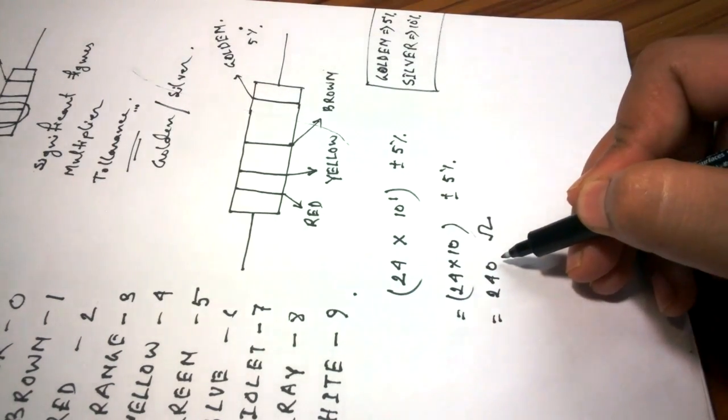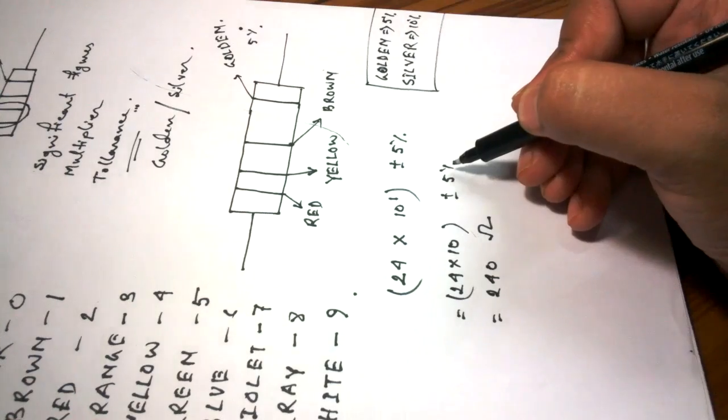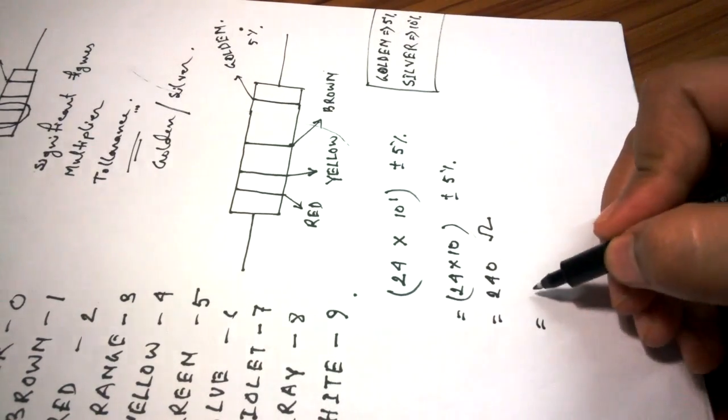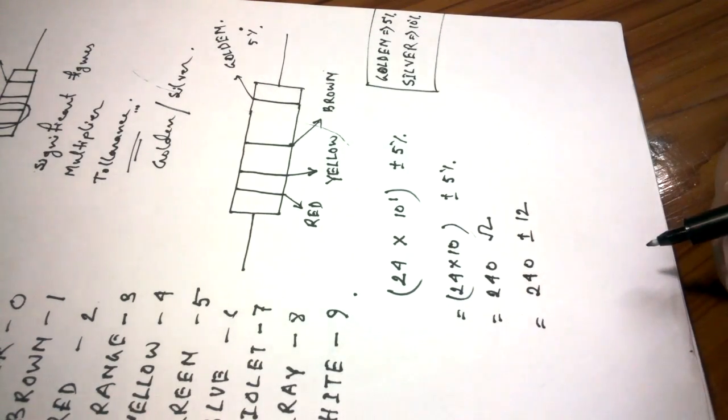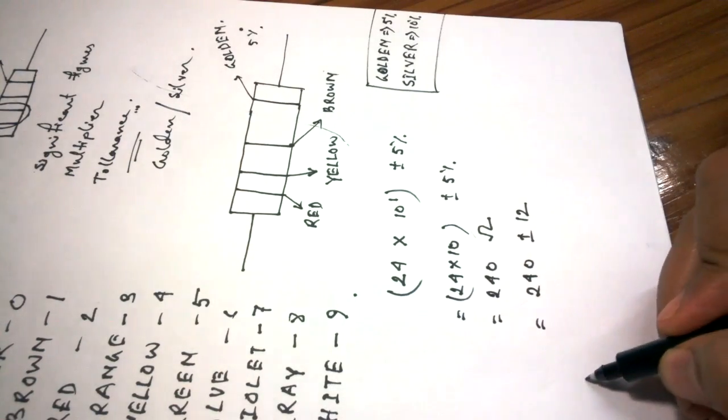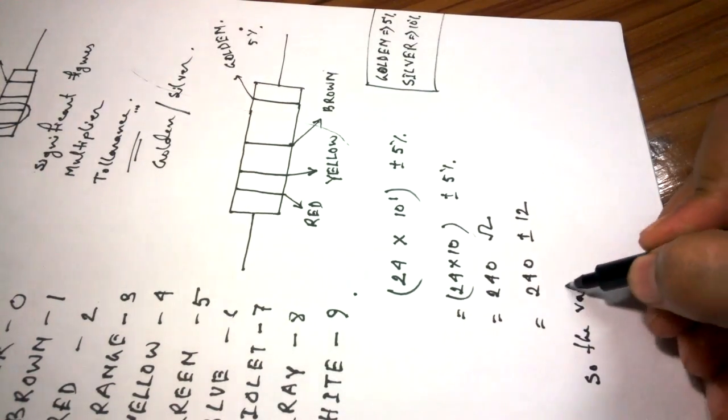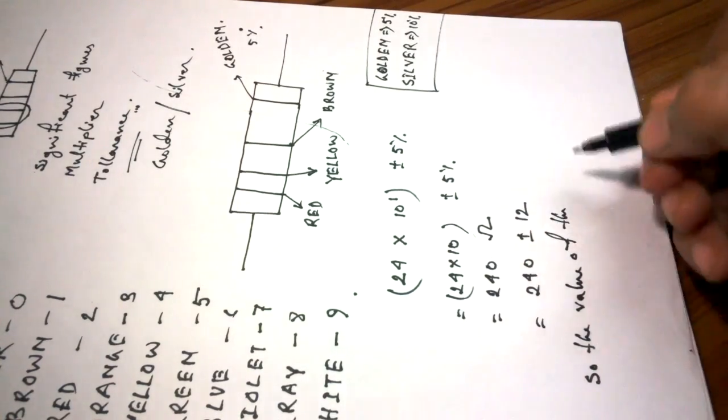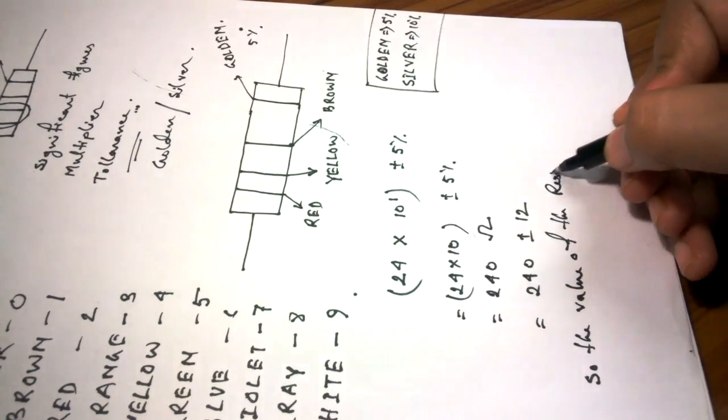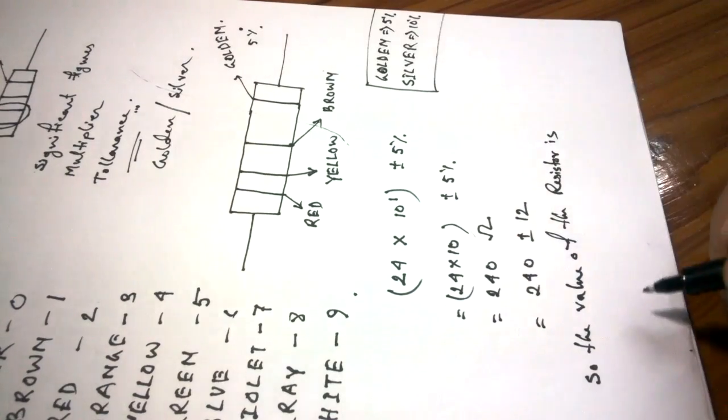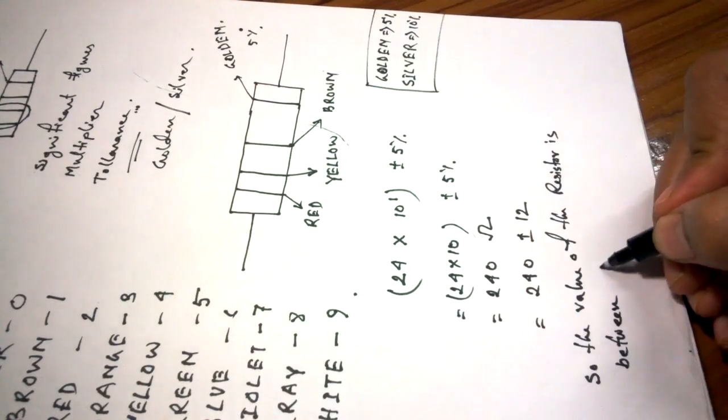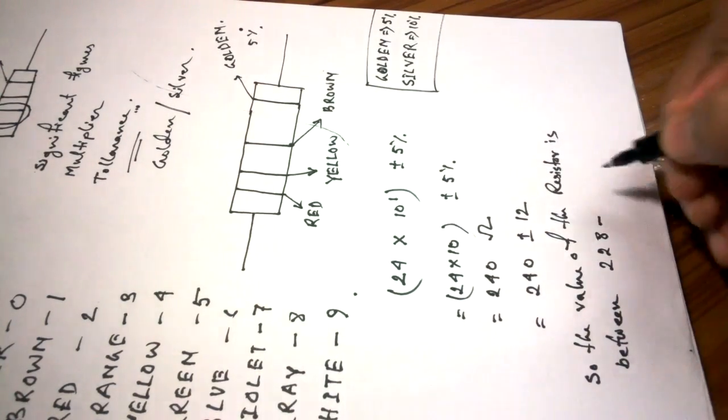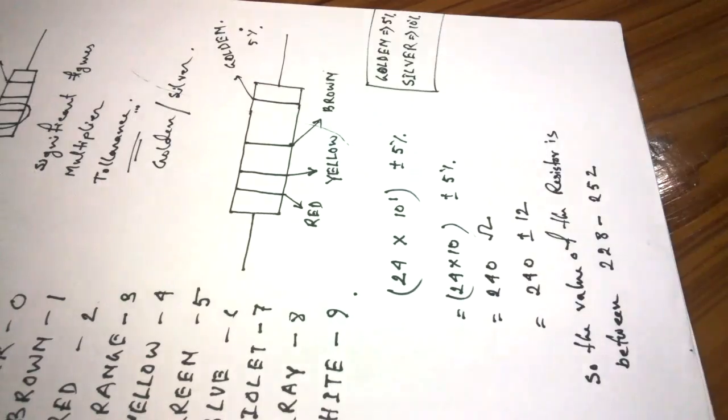The value of this resistor is 240 ohm, but as it has a tolerance of 5 percent, the actual value of this resistor will be between 228 ohm and 252 ohm.